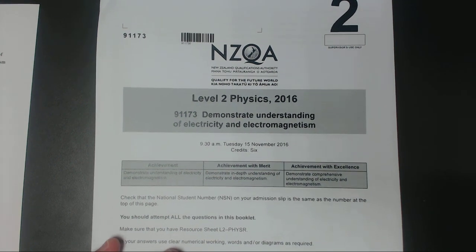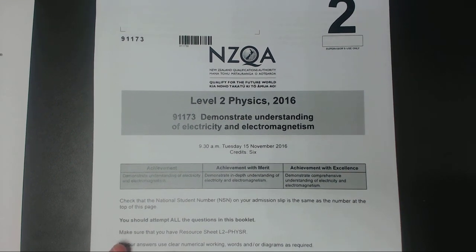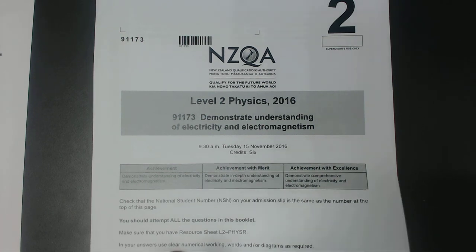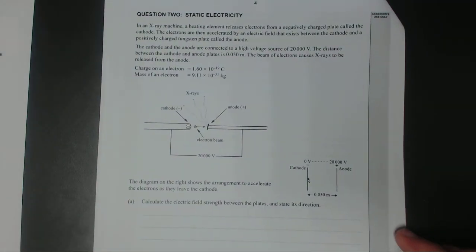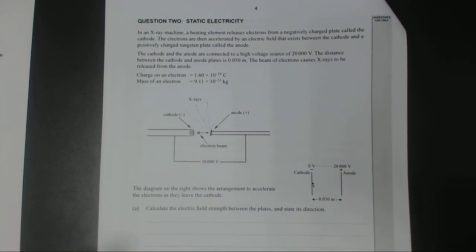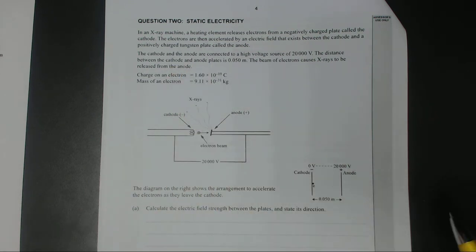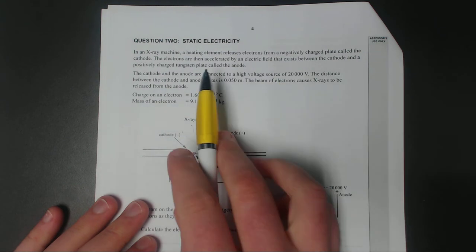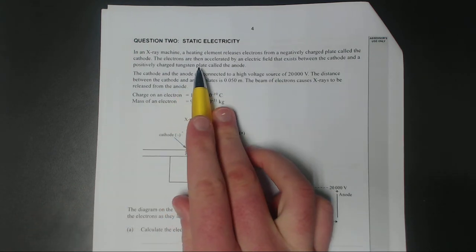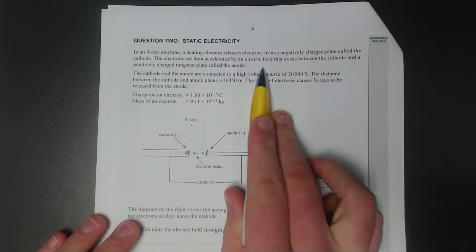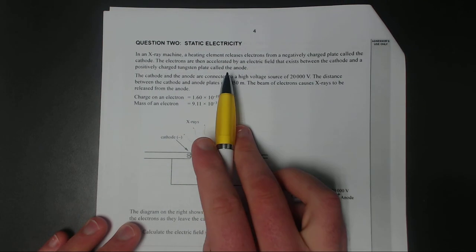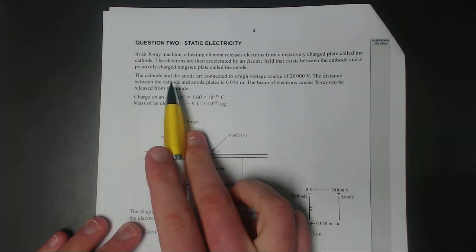For this video I'll be working through question 2 of the 2016 level 2 physics exam on electricity and magnetism. Question 2, static electricity. In an x-ray machine a heating element releases electrons from a negatively charged plate called the cathode. The electrons are then accelerated by an electric field that exists between the cathode and positively charged tungsten plate called an anode.